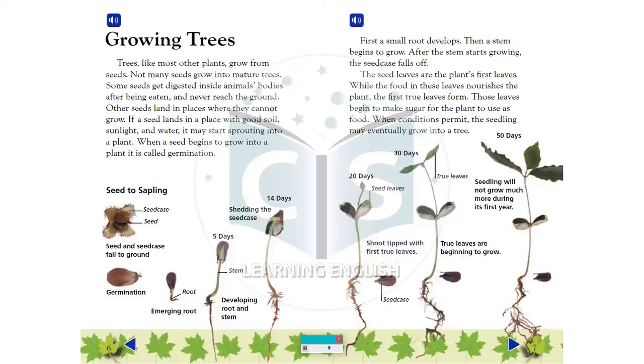If a seed lands in a place with good soil, sunlight, and water, it may start sprouting into a plant. When a seed begins to grow into a plant, it is called germination.